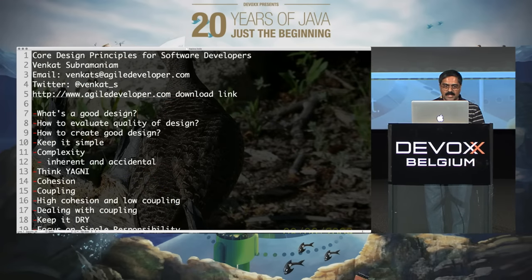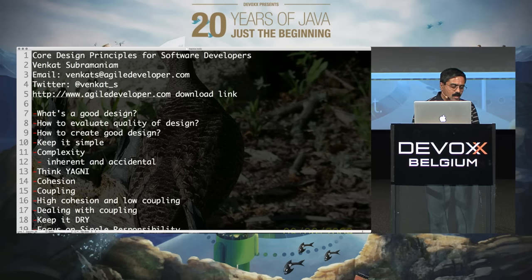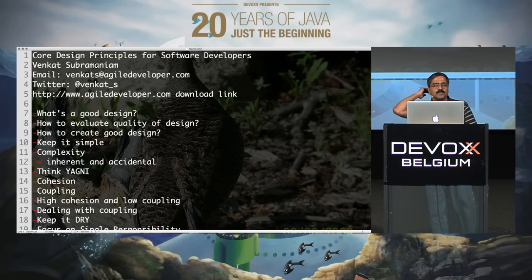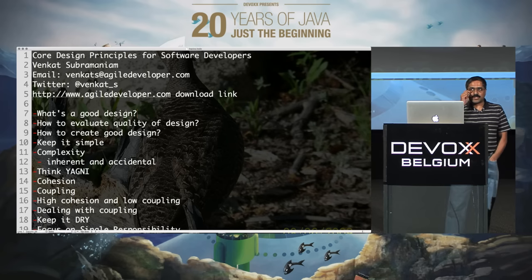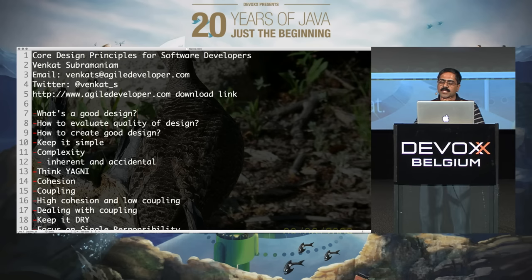Welcome to the session on Core Design Principles for Software Developers. My name is Venkat Subramaniam. We're going to talk about some of the things we need to think about when it comes to designing software, specifically some of the principles we can consider when writing code on a daily basis.